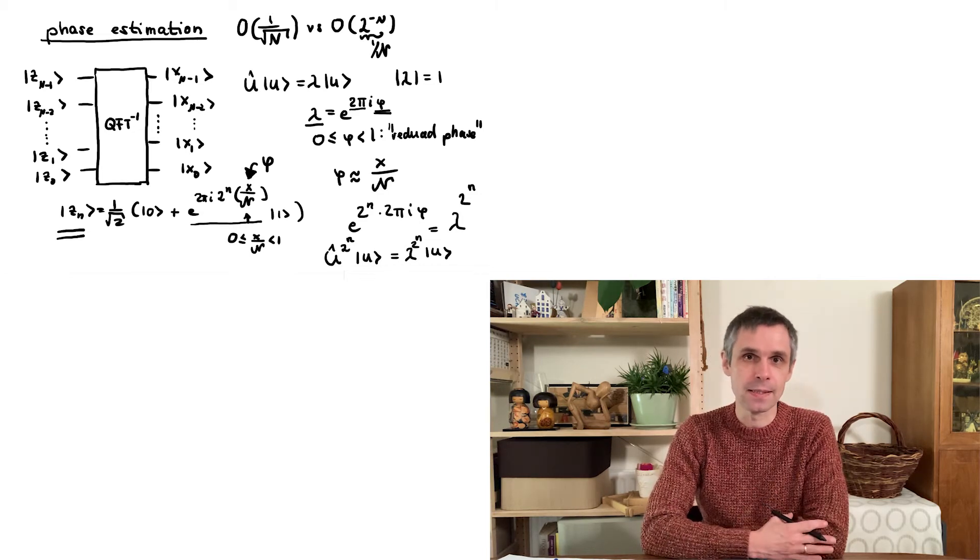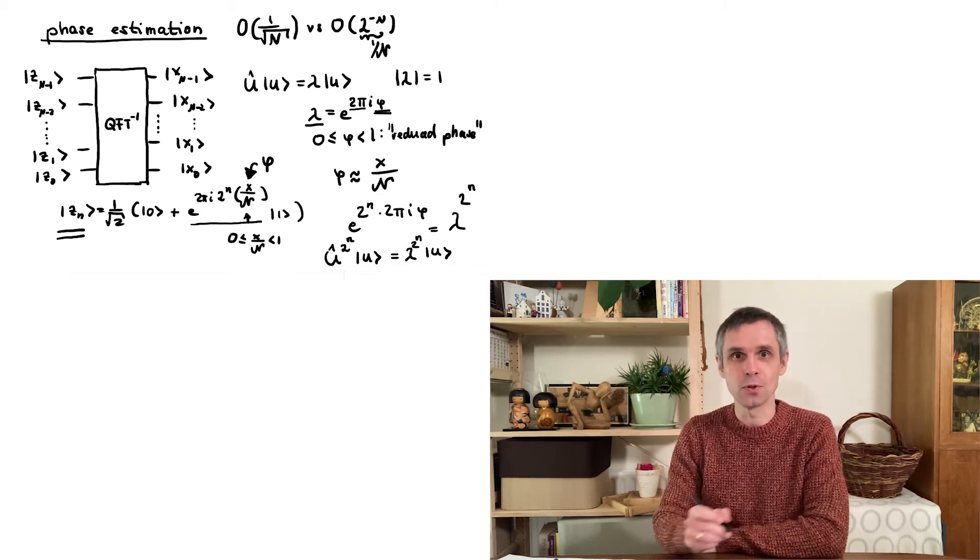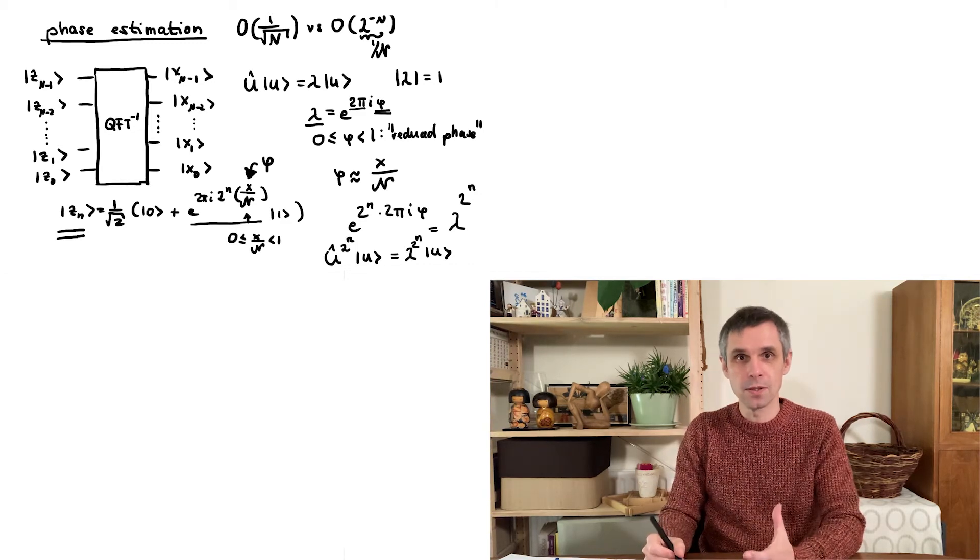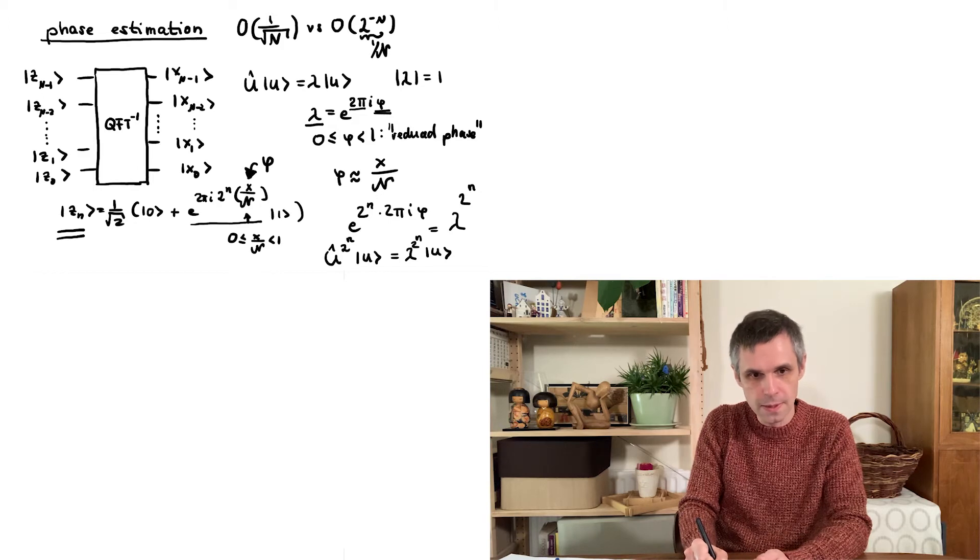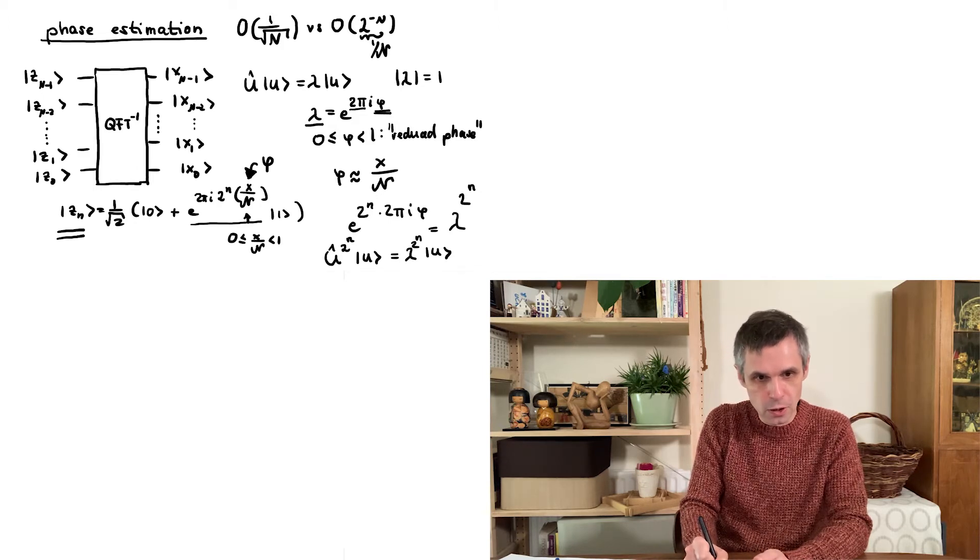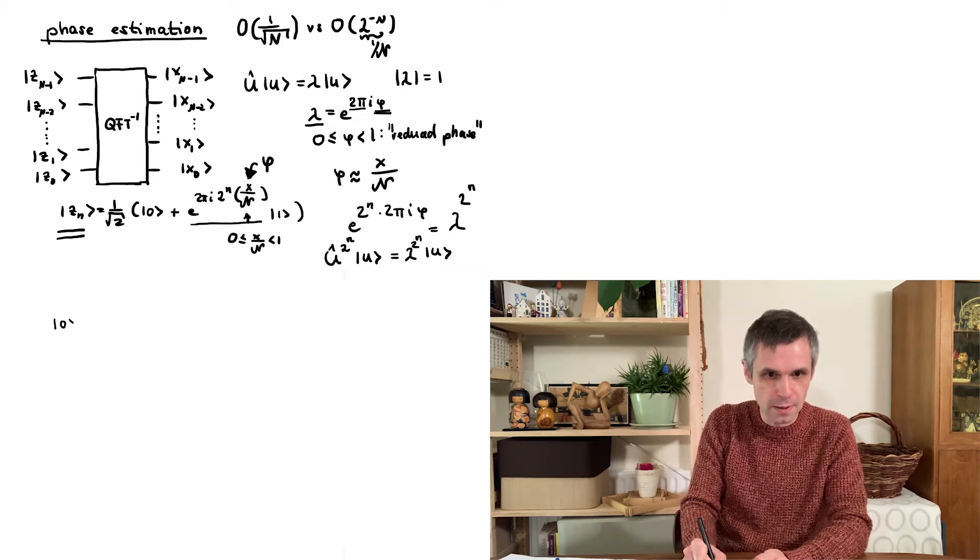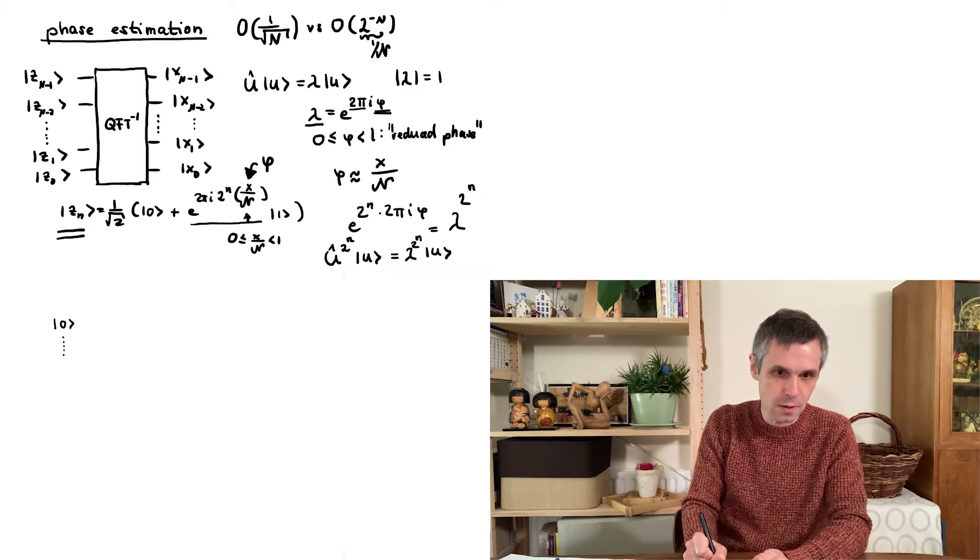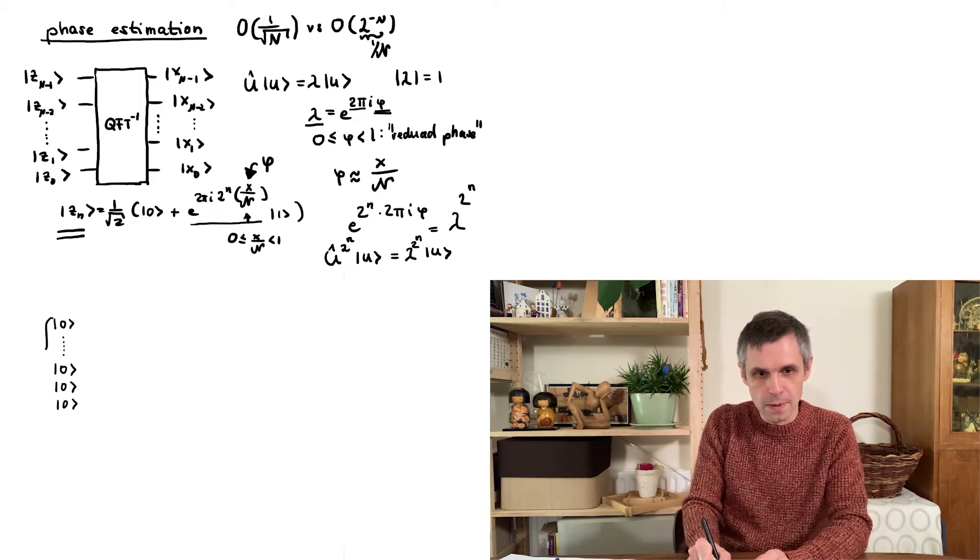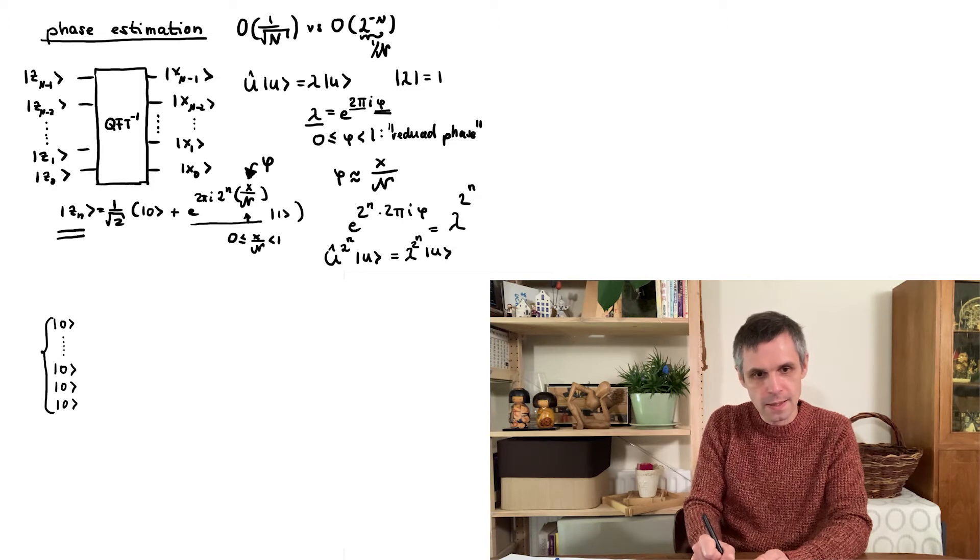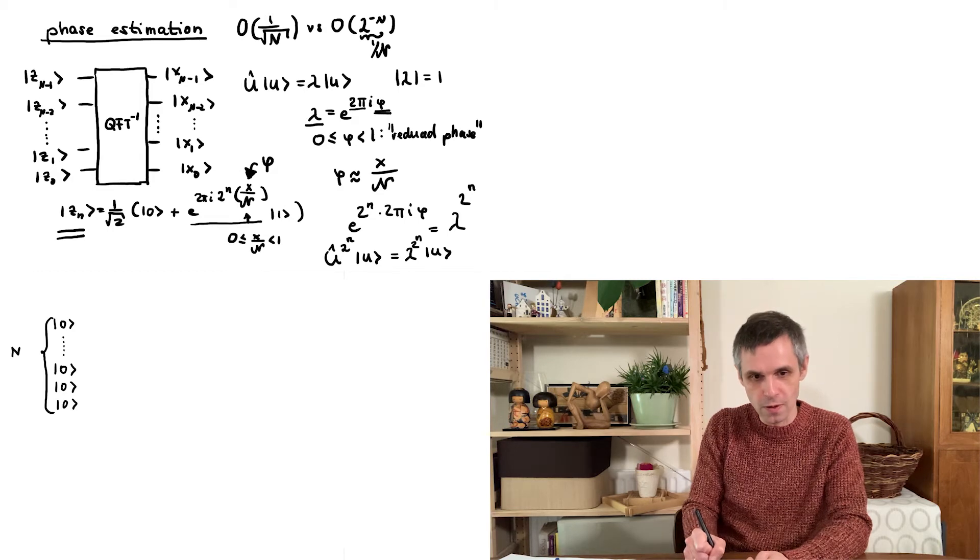And this directly translates into the following quantum circuit, namely a circuit that is directly designed to produce the correct phase factors in the states of our quantum bits. But because we initially don't know what this should be, we start out by placing them all into these computational basis states zero. So, up here we have n quantum bits, and this number n will determine the position of our approximation of the phase.